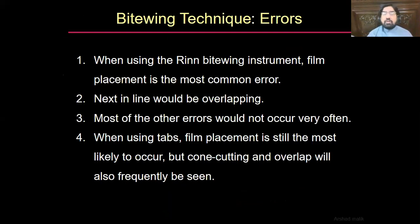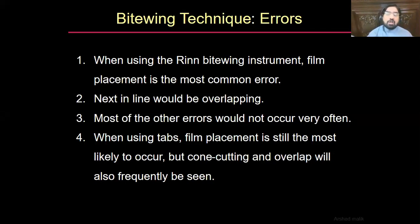When using the Rinn bite-wing instrument, film placement is the most common error — missing the proper placement position. Next in line is overlapping. When using the tab, film placement is still most likely to occur, but cone cutting and overlapping will also frequently be seen. These are the common bite-wing errors which we have mentioned in our previous slides.